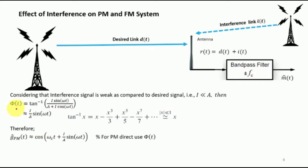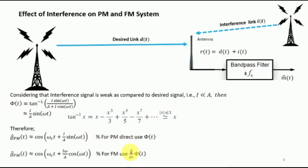This phase φ(t) directly relates to a PM signal: cos(ωc·t + kp·sin(ωt)), where i/A corresponds to the sensitivity parameter kp. For a frequency modulated signal, we take the derivative of φ(t), giving cos(ωc·t + (i·ω/A)·cos(ωt)), since the derivative of sine is cosine.